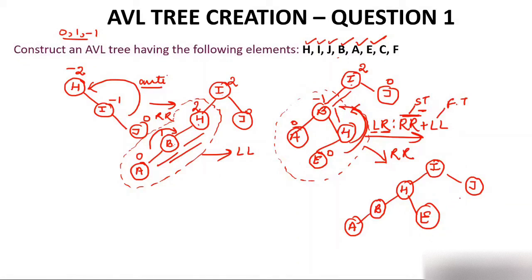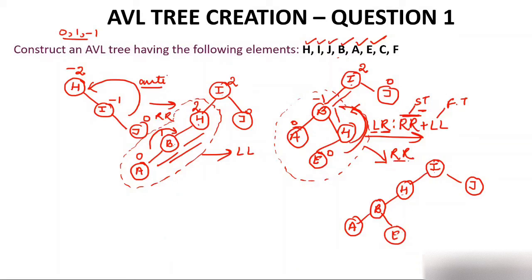In BST, AVL tree is a binary search tree where every parent is greater than its left child and smaller than its right child. Since E is smaller than H, E goes to the left of H after RR. Now we have completed only the RR part of the LR rotation. The balance factor at I is still 2, so now apply LL rotation on the full tree rooted at I.